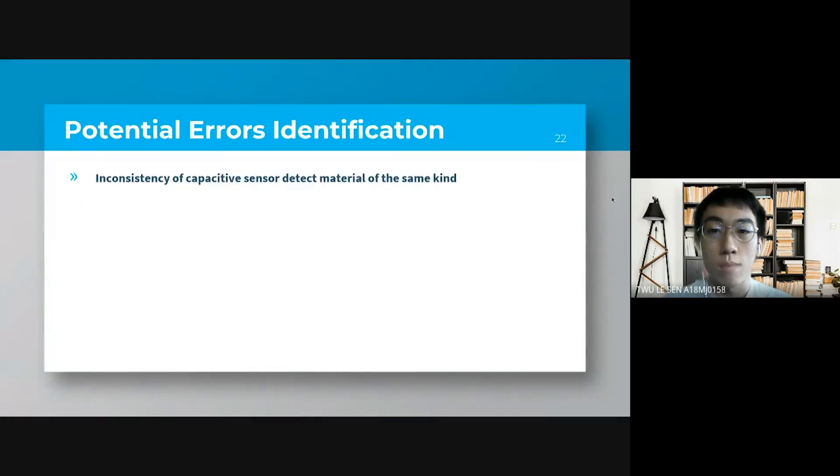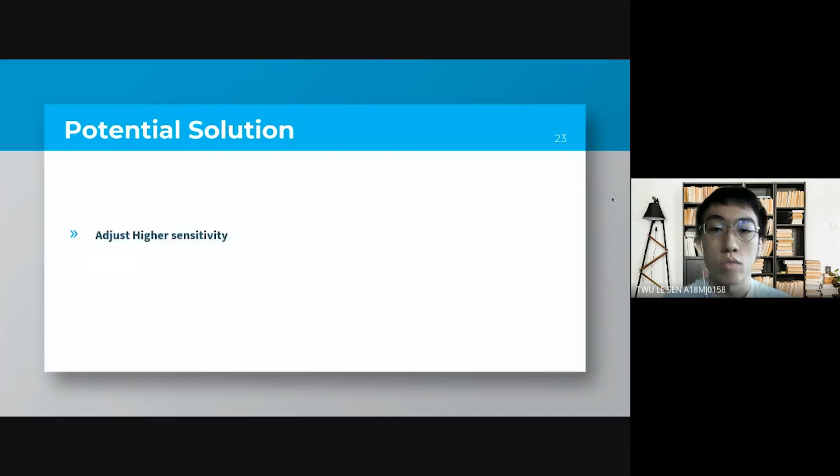After our testing, we found some of the potential error and some of the solution to solve the problem. So the potential error identification is the inconsistency of capacitive sensor to detect materials of the same kind and inability of capacitive sensor to detect plastic. And the last one is inaccurate detection of object in some complicated condition. So the solution to solve the potential error is to adjust the higher sensitivity of the capacitive sensor to detect more glass and replace the plastic bin to the unsupported bin. And the last one is to adjust the sequence of the coding to make sure that the complicated condition can also be detected accurately.